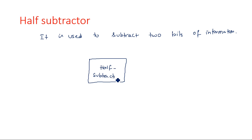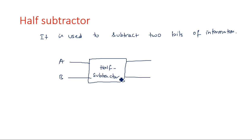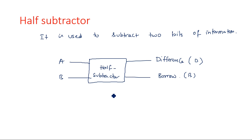The half subtractor has two inputs A and B. Now, what are the outputs? In the adder we have sum and carry, but in the subtractor you will have difference and borrow. Difference is indicated by D and borrow is indicated by B.